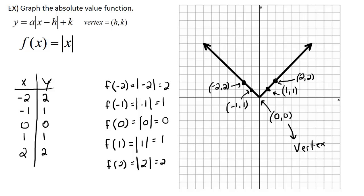In this video, we've got three absolute value functions, and we want to explore the slope of the two lines. Sometimes it'll get wider, sometimes it'll get narrower. We're going to start with f of x equals absolute value of x — the standard absolute value function — and the vertex is going to be right here in the center at (0, 0).